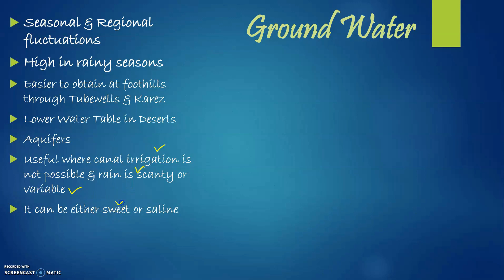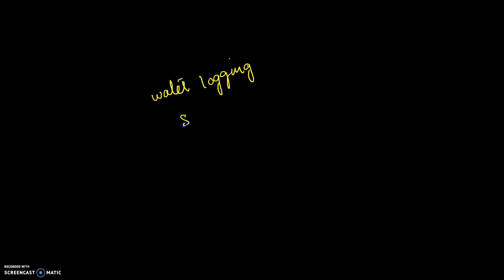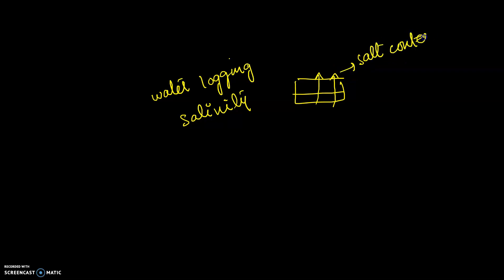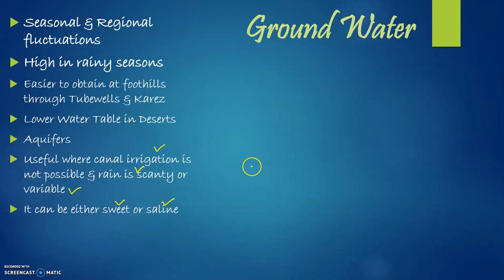Groundwater can either be sweet or saline. Relating this to water logging and salinity — a topic discussed in a previous video — if the water is saline and comes to the surface along with groundwater, the salt content also reaches the surface. When evaporation then occurs, the salt left behind can damage the fertility of the soil. So groundwater can be either sweet or salty.